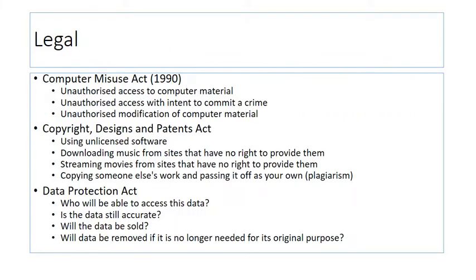Finally, three pieces of legislation to consider. There's the Computer Misuse Act, the Copyright Designs and Patents Act, and the Data Protection Act. The Computer Misuse Act looks at unauthorised access to computer material, access to commit a crime, and unauthorised modification of computer material — what damage can be done by misusing a computer, the access that can be obtained, and what you can do with data once it's been retrieved.